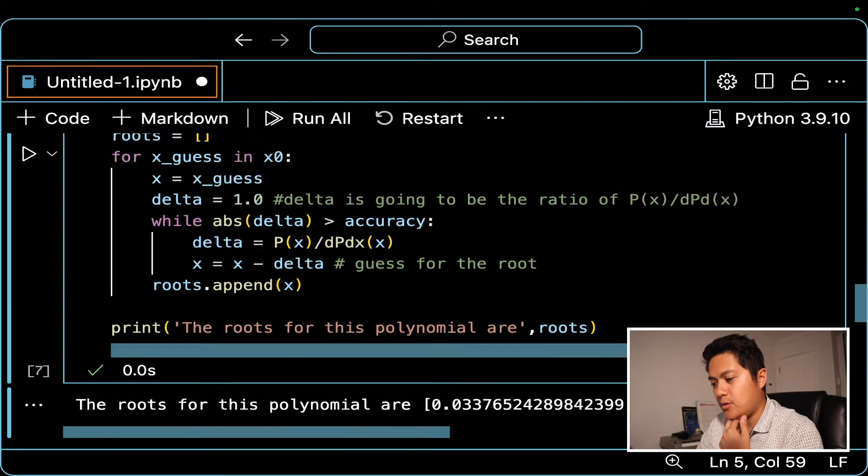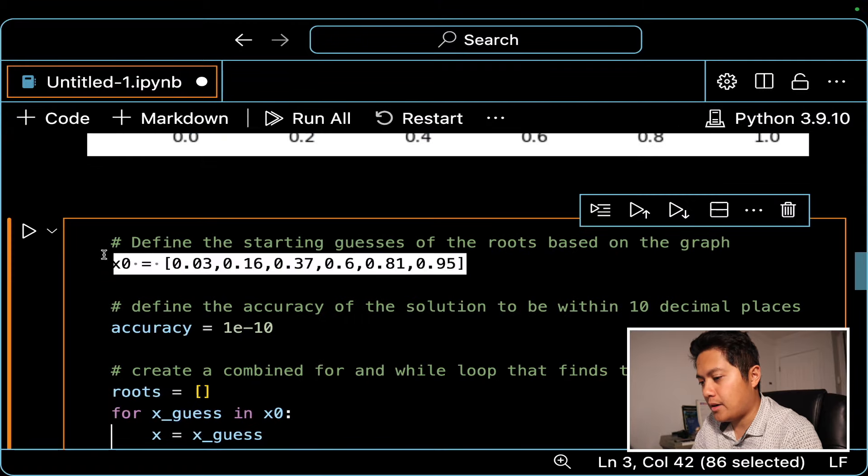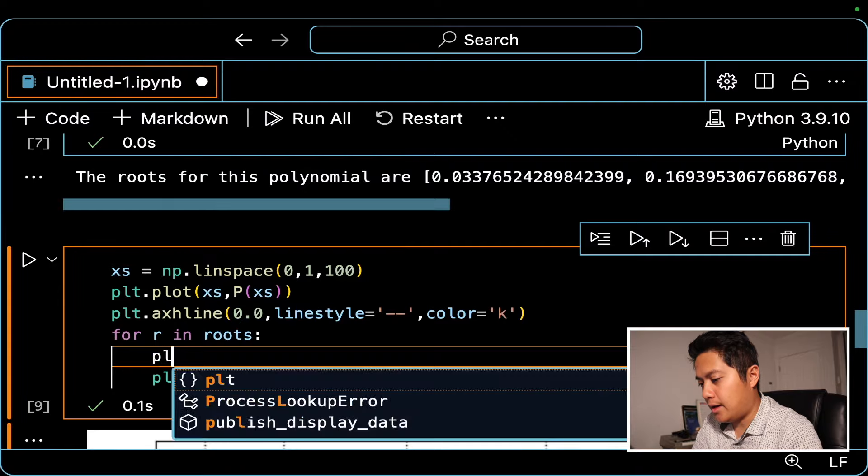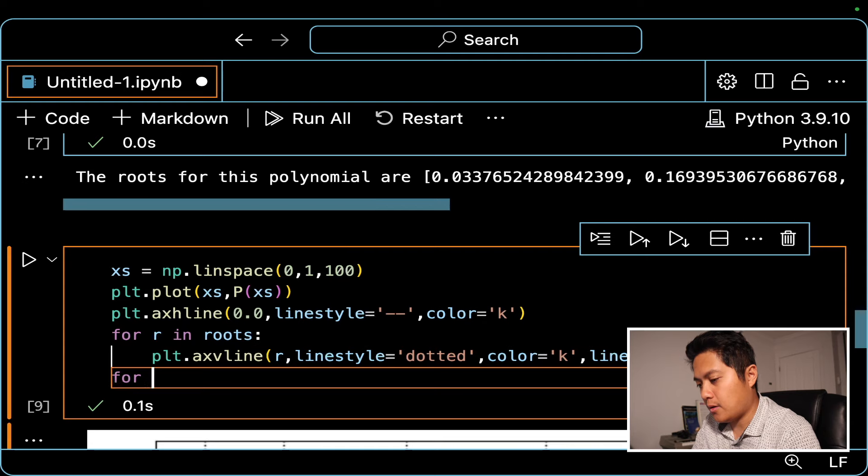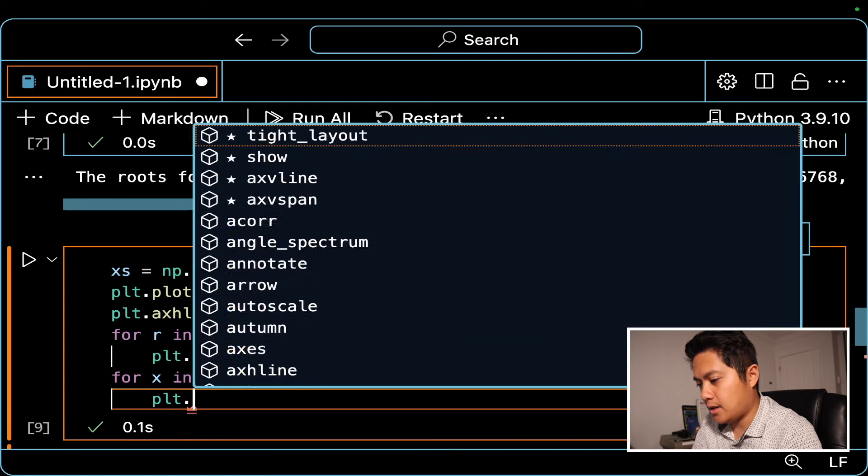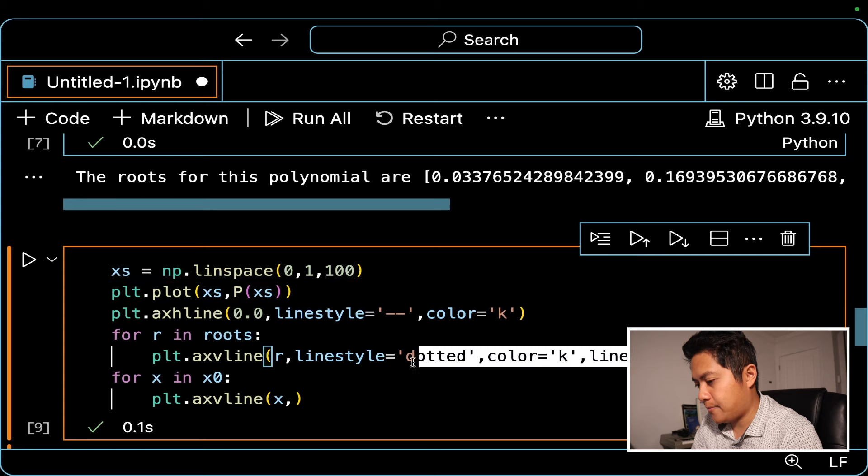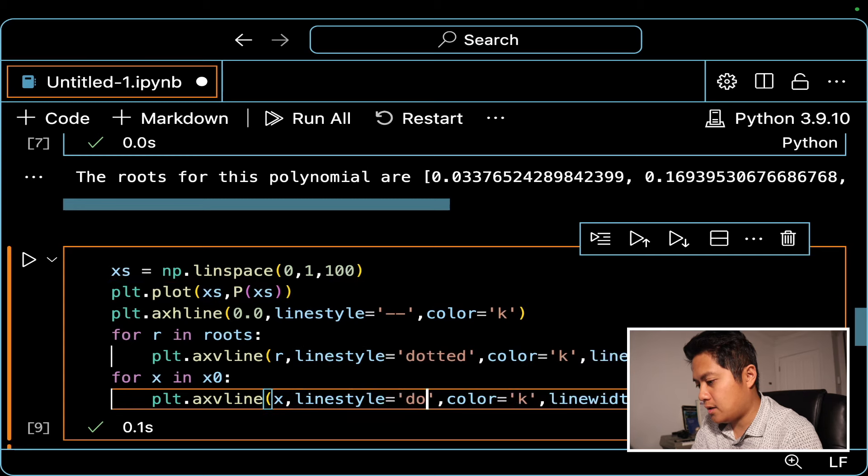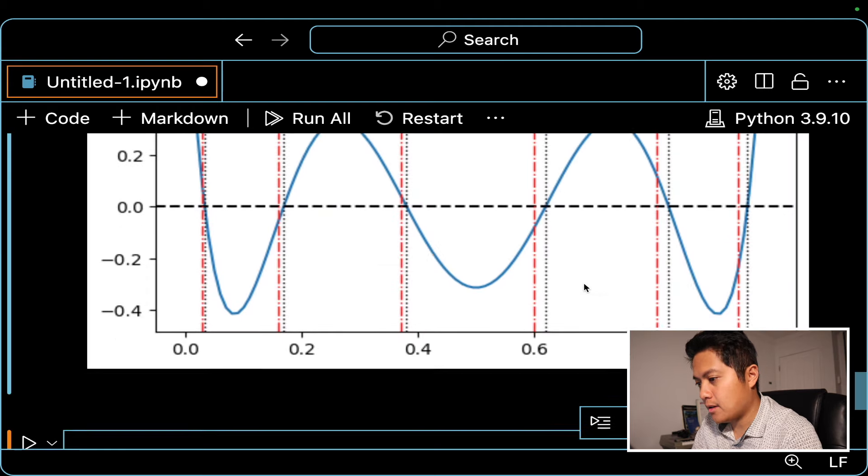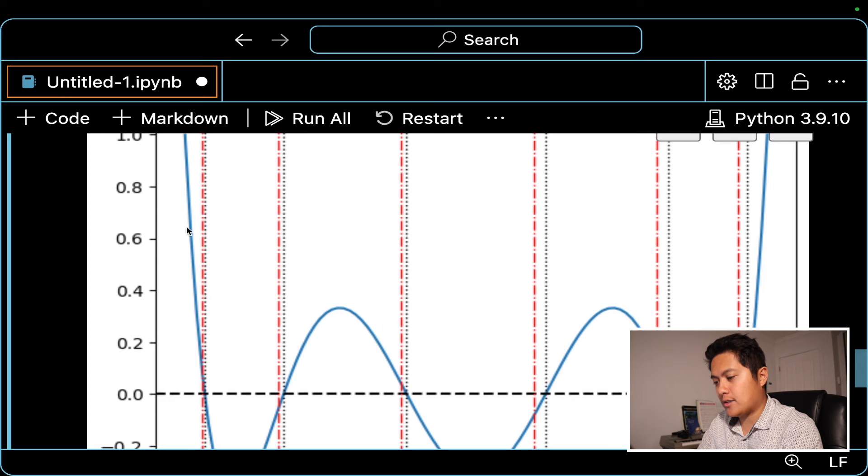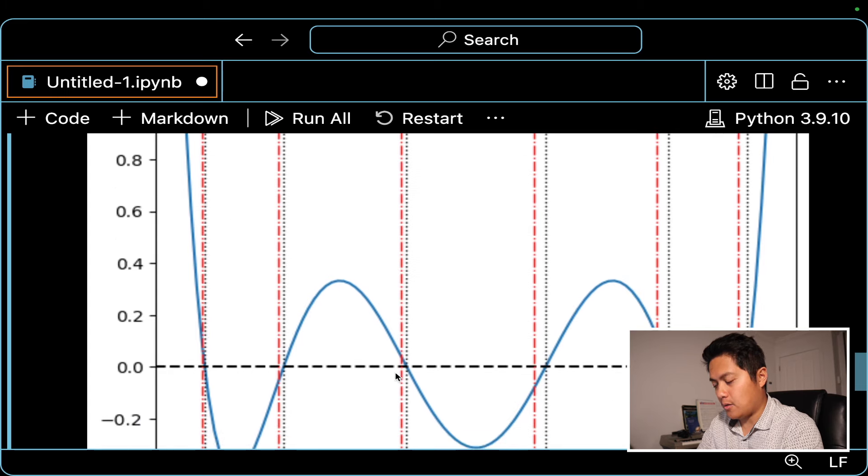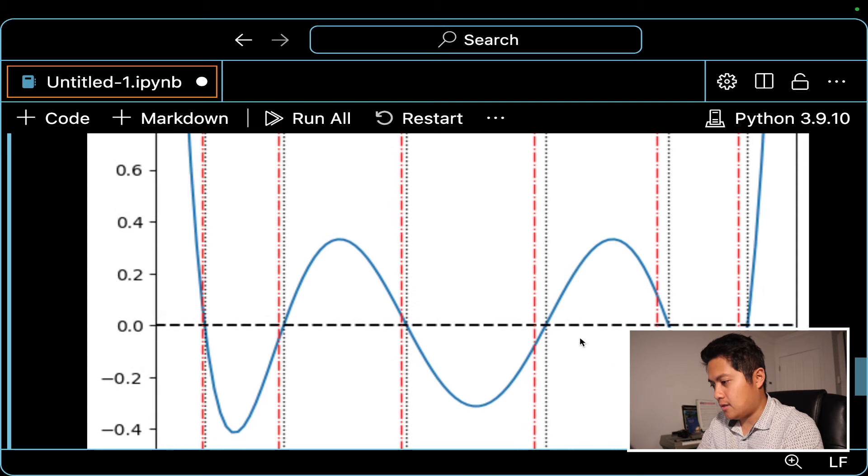I think what actually might be pretty cool is actually why don't we plot where our initial guesses were. For r in roots, do that. Oh, then we'll also plot just for x in x not plt dot x v line x. And then let's change this from dotted to maybe dash dot and color maybe red. Let's just see what we get. So yeah, we did move right. So the red is our initial guess. The black was where the Newton's method converged. And yeah, we can see we were actually pretty good with our guesses. We didn't have to move that much.